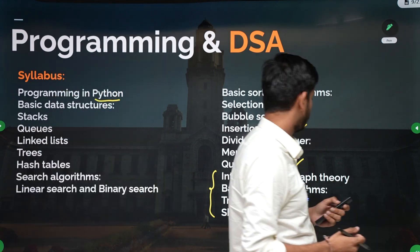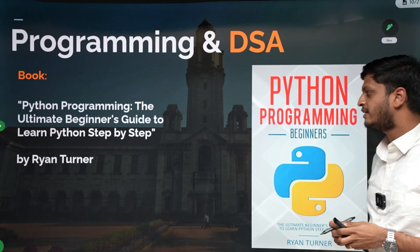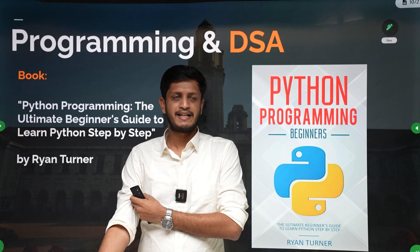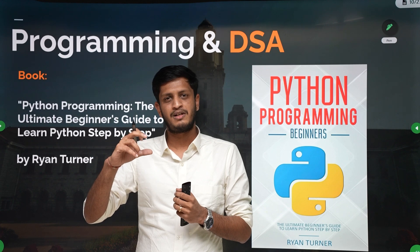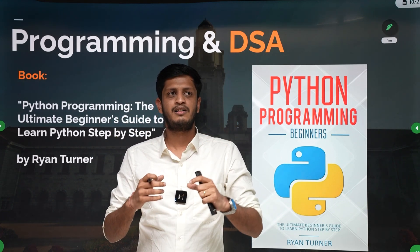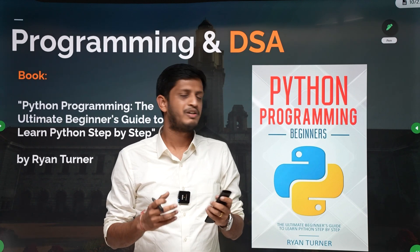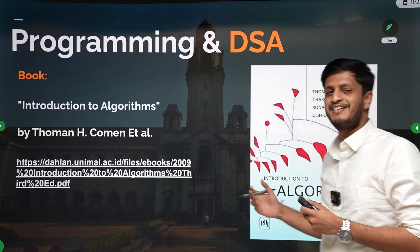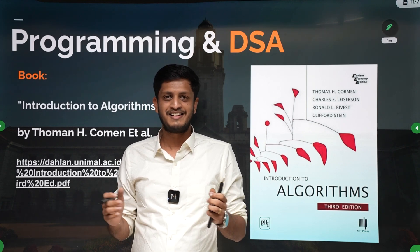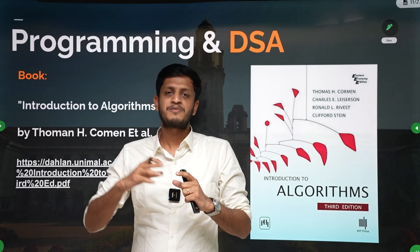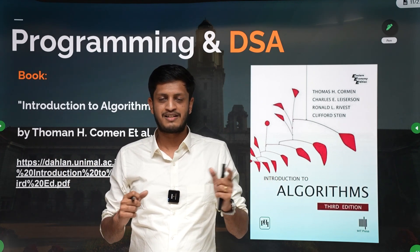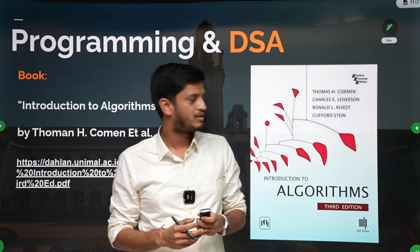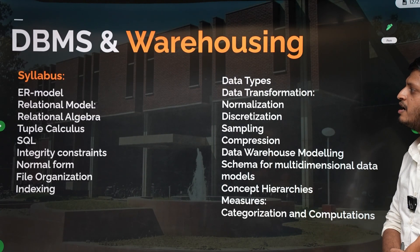For Python, you can refer to the book by Ryan Turner, which covers basic Python programming — you don't need an advanced level for the GATE exam. It includes detailed code snippets, and in the GATE exam you are typically given a code snippet and asked to predict the output, so we'll do a lot of practice for such problems. For algorithms, the standard textbook is CLRS (Cormen), but reading it straight away can be difficult due to the complex pseudocode.